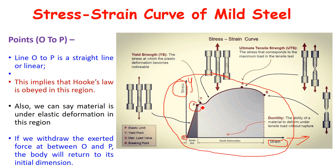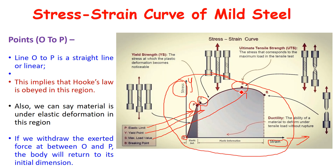Point P represents the elastic limit of steel. Point Y represents the yield point of steel. Point S represents the maximum load value, which is also called the ultimate load. And point B represents the breaking point of the steel. These are the four important points in the stress-strain curve.